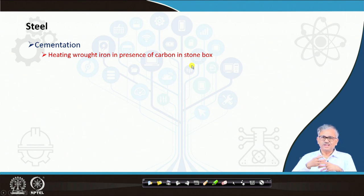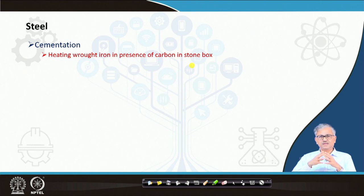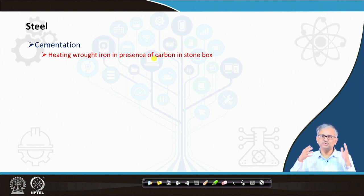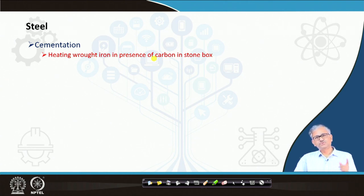To increase hardness, people heated the wrought iron in the presence of carbon in a stone box — that is the cementation process. The problem was that carbon would only increase on the surface because penetration to the center takes a very long time. So cemented wrought iron was very hard on the surface but very ductile inside — the core remains ductile and the surface becomes hard. This is a reverse steel making: first produce pure iron, then incorporate carbon, unlike today where we produce liquid iron with high carbon and then purify it to the optimum level.